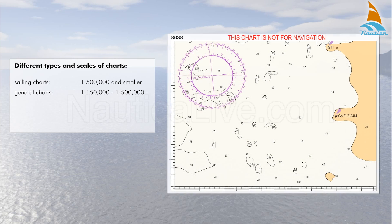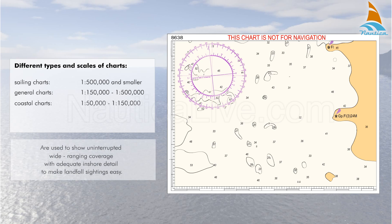The coastal chart uses a scale of between 1 to 50,000 and 1 to 150,000 and is used to show uninterrupted wide-ranging coverage with adequate inshore detail to make landfall sightings easy. Fisheries charts also use these scales.